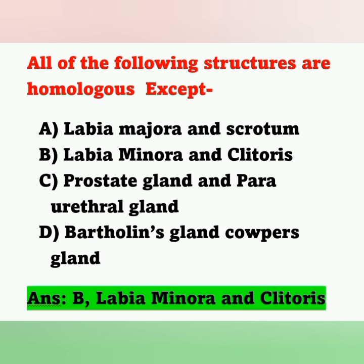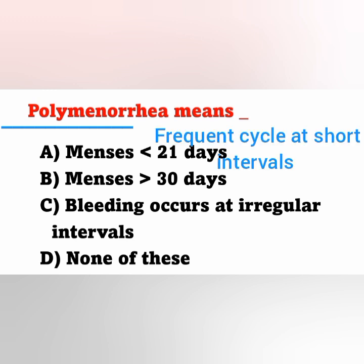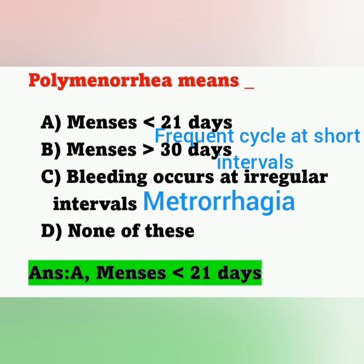Move on to the next question. Polymenorrhea means: Option A, menses less than 21 days; Option B, menses greater than 30 days; Option C, bleeding occurs at irregular intervals; Option D, none of these. Polymenorrhea means there is frequent menstruation — menstruation occurs at short intervals, with a shorter time period. The correct answer is Option A: menses less than 21 days.